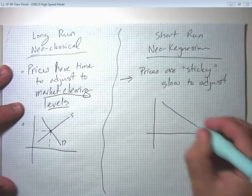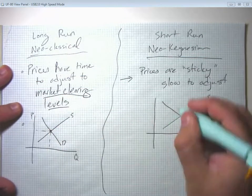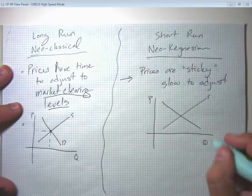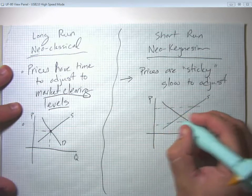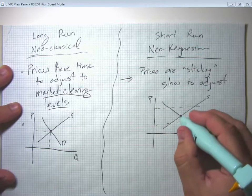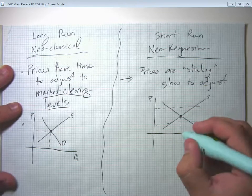Whereas in the short run, we could have prices that are stuck at a level that doesn't produce equilibrium, that doesn't produce supply equals demand.